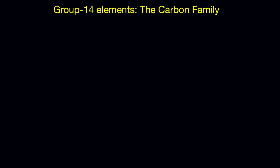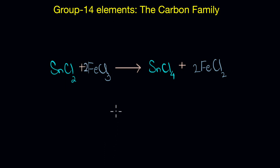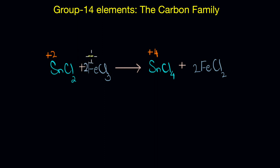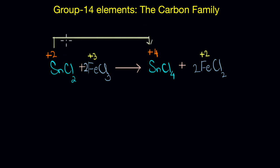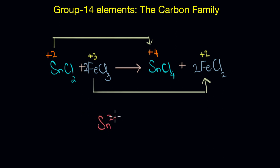Now let's look at another reaction. Here, tin chloride (SnCl₂) is reacting with ferric chloride (FeCl₃) to form SnCl₄ and FeCl₂. In the reactant side, tin has a plus 2 oxidation state, while it gets plus 4 in the product. Iron changes its oxidation state from plus 3 to plus 2. So the oxidation state of tin increases from plus 2 to plus 4 — it is undergoing oxidation — and in the process it reduces iron from plus 3 to plus 2. That means tin in plus 2 oxidation state acts as a reducing agent.